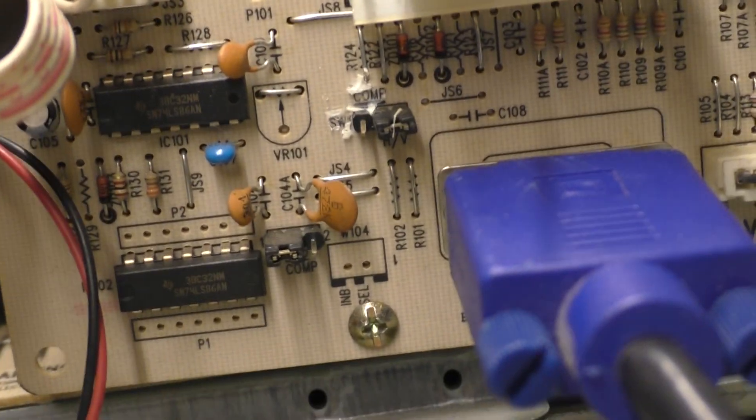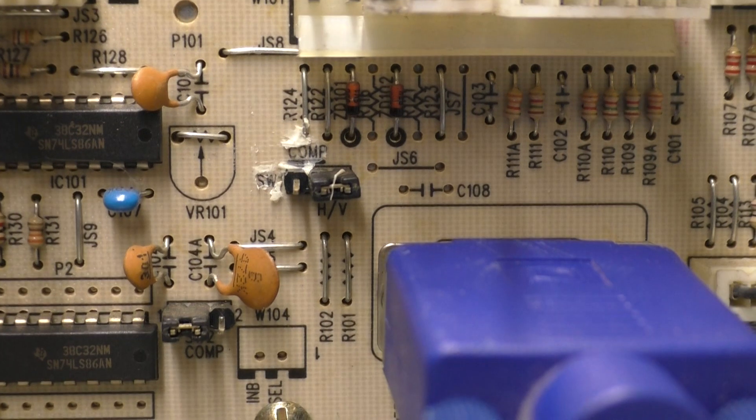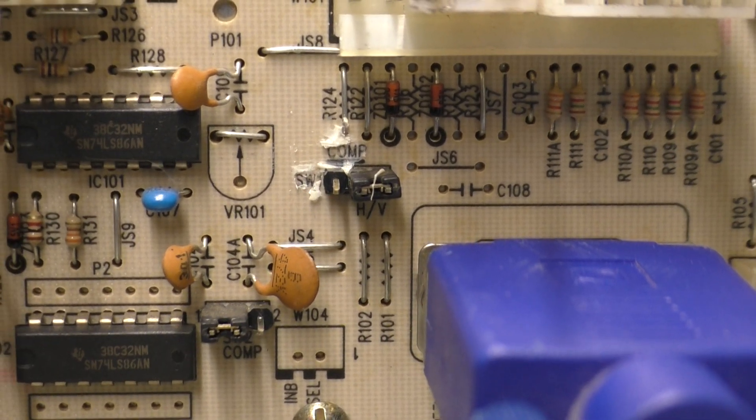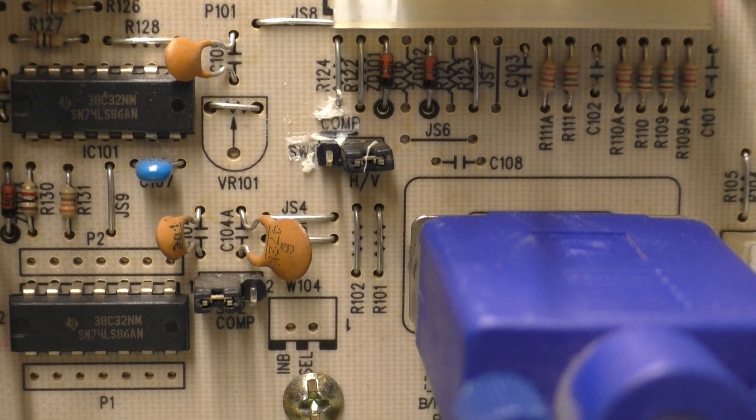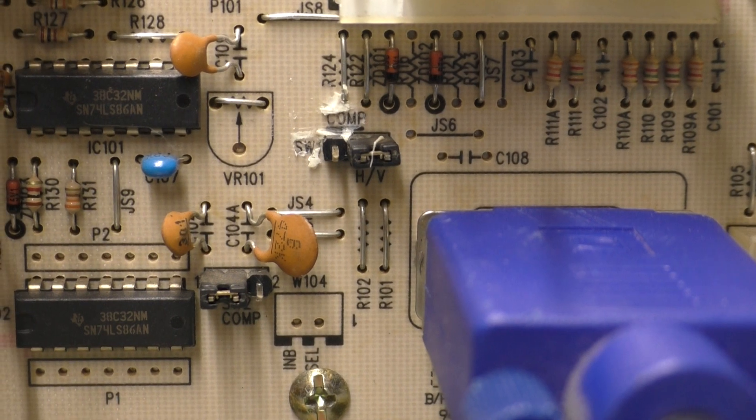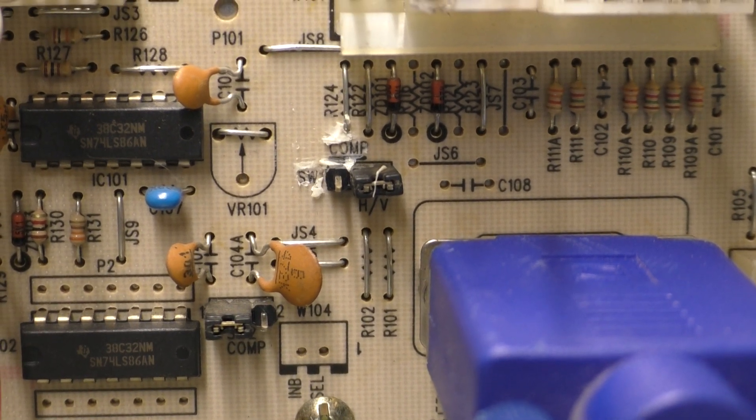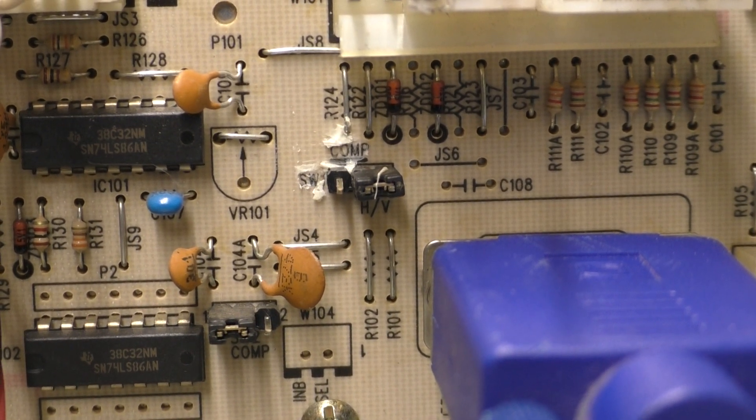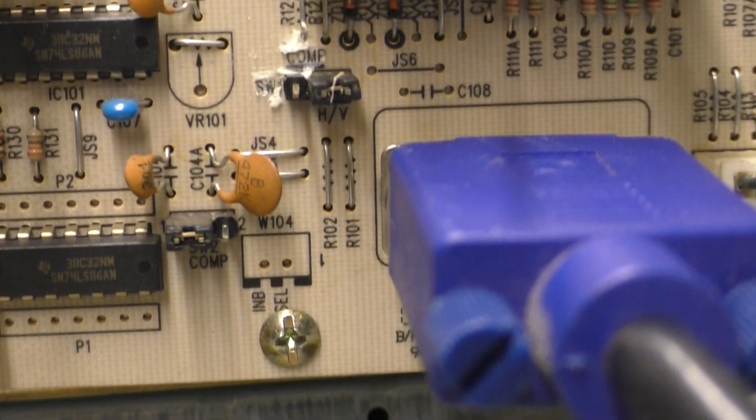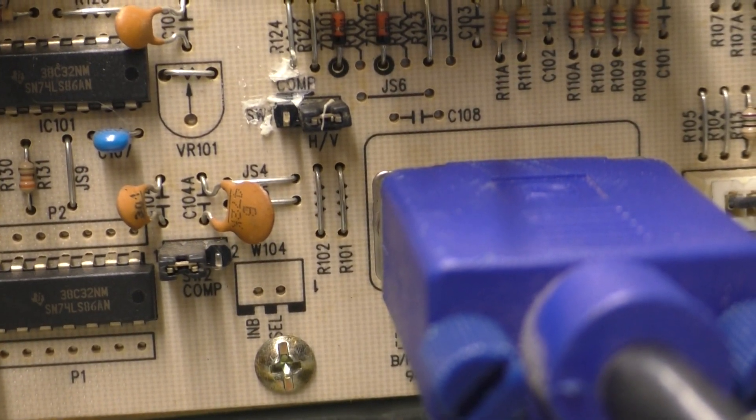So you can see this little jumper here. It has HV, and then there's a middle pin, a right pin, and a left pin. The factory position was over on composite. So it says COMP right there. So the middle pin on the left pin is composite sync, and the middle pin on the right pin is a separate horizontal vertical sync.